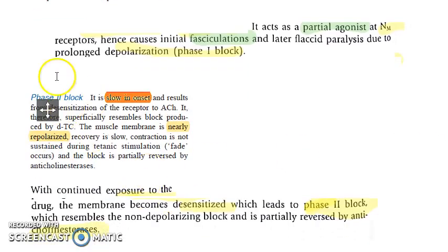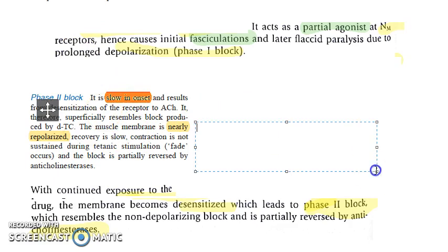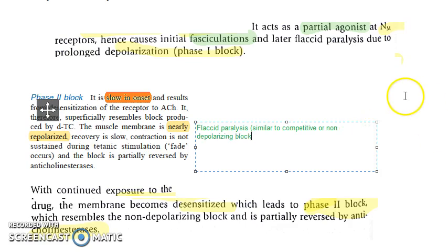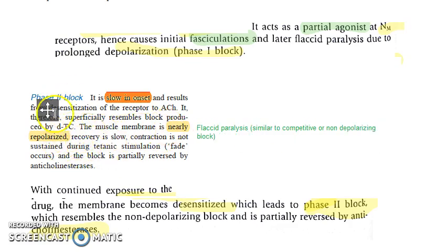In phase 2 block, which is slow in onset, the muscle membrane is nearly repolarized. However, nobody can bind because succinylcholine is still sitting there. So the muscle will have flaccid paralysis, similar to competitive or non-depolarizing block. The key word to remember is that the muscle membrane is repolarized, and there is continued relaxation of the muscle.